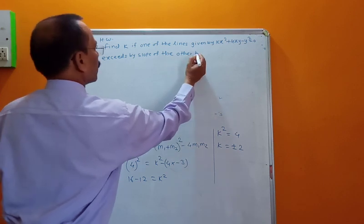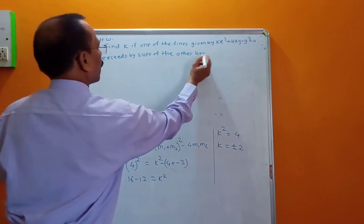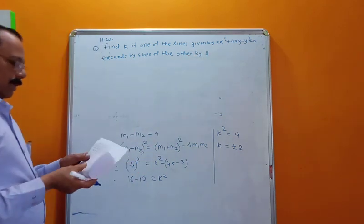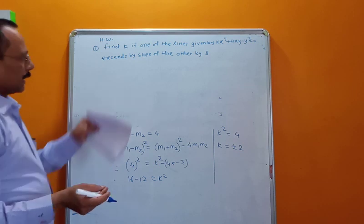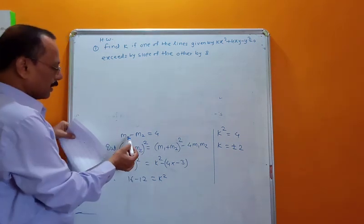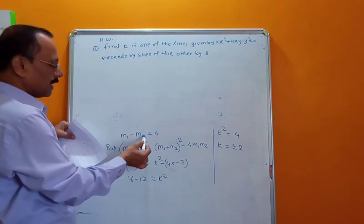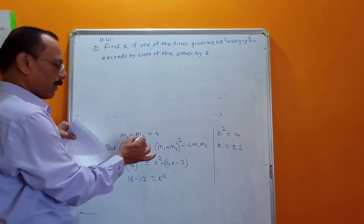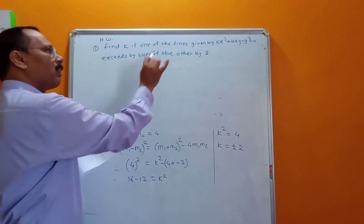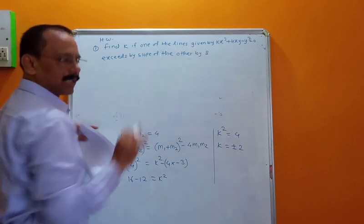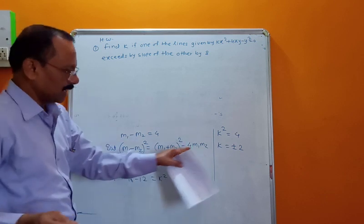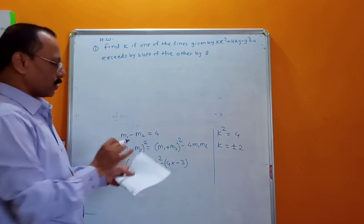Exceeds by 8 means m1 − m2 = 8 is the condition. You have to solve this just like the second example, using the sum and product of slopes.